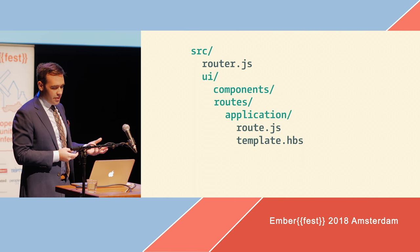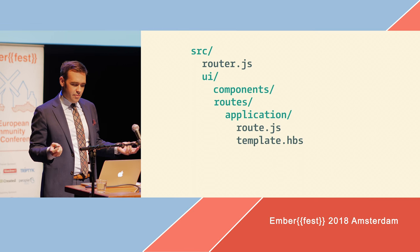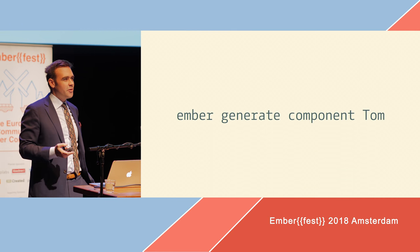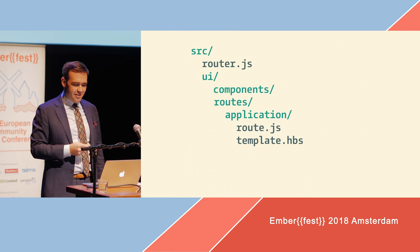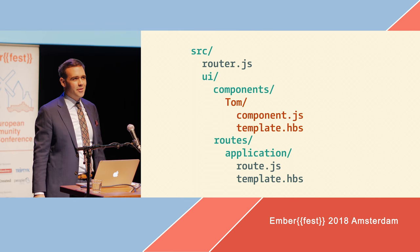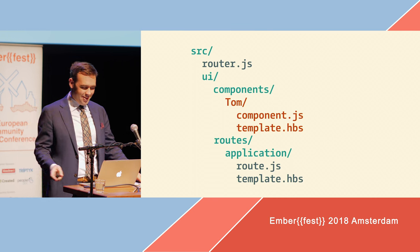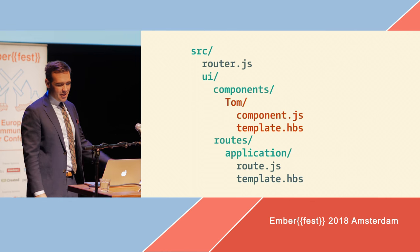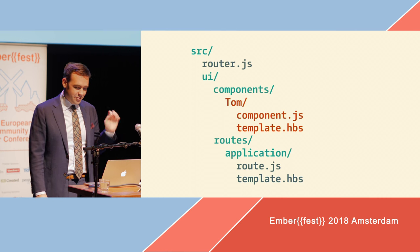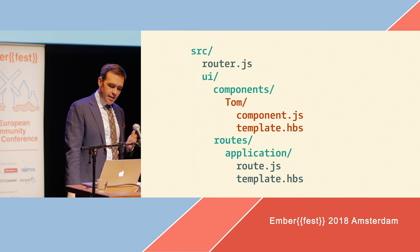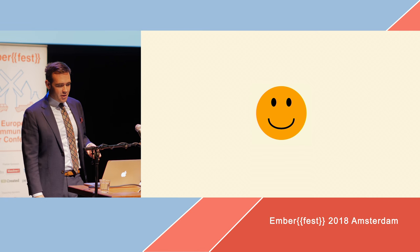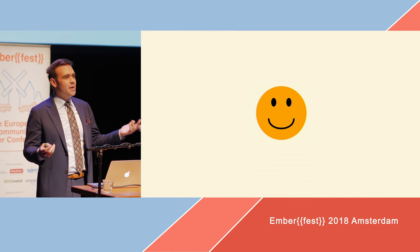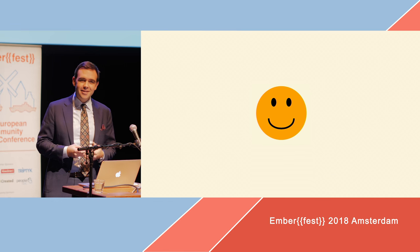Let's look at what happens when we create a new component — specifically a component called Tom. We'll run our generator in the command line and in our beautiful new file system, this is going to give us two files. Actually more than that, but I'm leaving the test out for the sake of illustration because JavaScript developers don't like tests. This will create a new directory called Tom and put a component JavaScript file and a handlebars template in the right place in our file system.